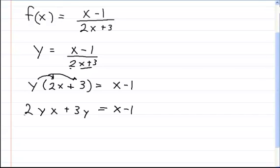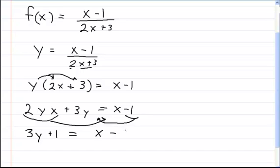Now I'm going to take this term and move it over here, and take this negative 1 and move it to that side. This gives me 3y plus 1 equals x minus 2yx. And now I can factor out the x